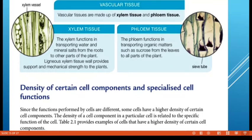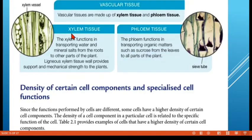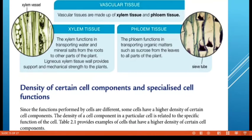Next we look at the density of cell components and specialized cell function. The density of cell components in a particular cell is related to the specific functions of that cell. Cell components here refer to organelles such as mitochondria, ribosomes, Golgi apparatus, rough endoplasmic reticulum, and so on. Some cells have many mitochondria, some have many chloroplasts, some have many ribosomes — this depends on the function of that cell. Just like a school has many students because its function is learning, and a hospital has many doctors and patients because its function is treating disease.